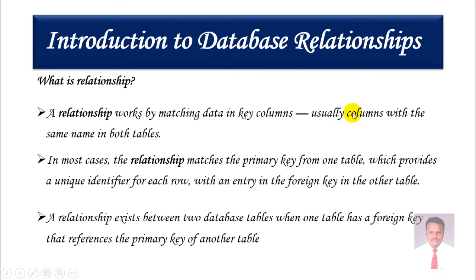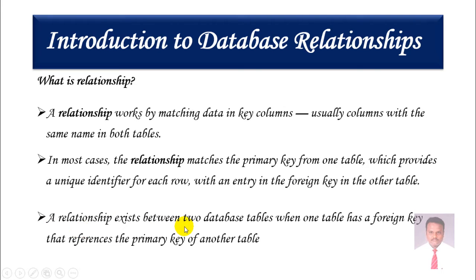How do you relate two tables? If you have the same column names in both tables, they can be linked or related. In most cases, the relationship matches the primary key from one table — which provides a unique identifier for each row — with an entry in the foreign key of another table. A relationship exists between two database tables when one table has a foreign key that refers to the primary key of another table.